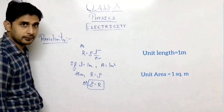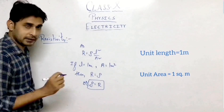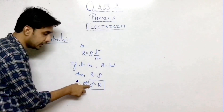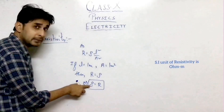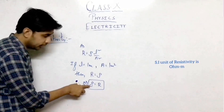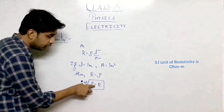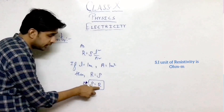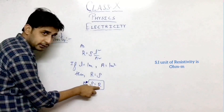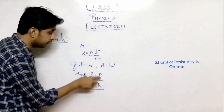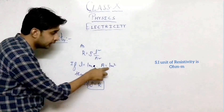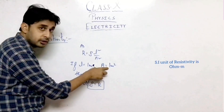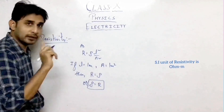So this is the definition. Once again: resistivity of the material of the conductor is numerically equal to the resistance of the conductor of unit length and unit area of cross section. Unit means 1.